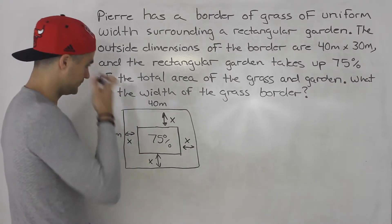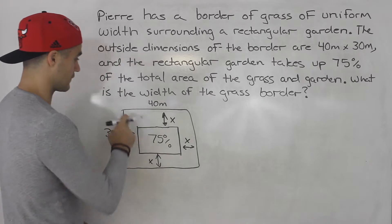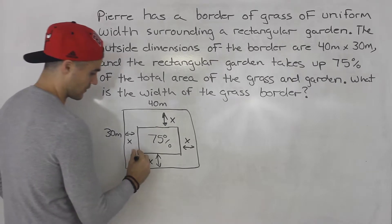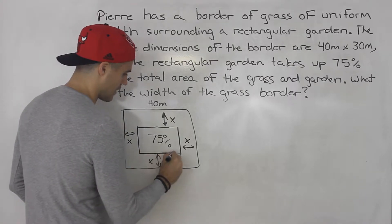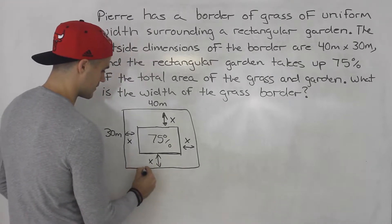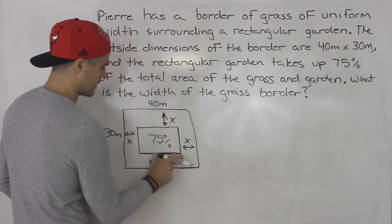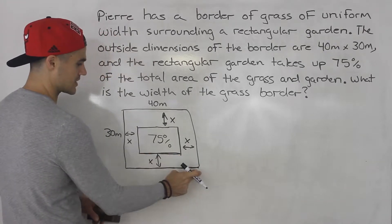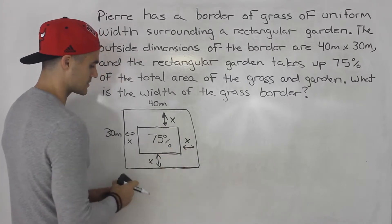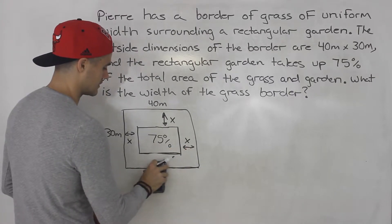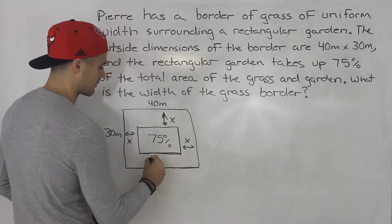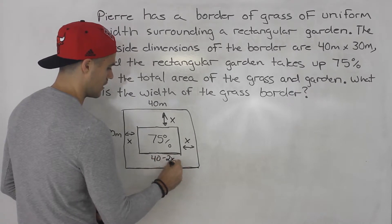So notice if this is 40, this is 30, this is x all around, we can create expressions for the length of the actual garden and the width of the garden. So if this whole thing here is 40 then what's this going to be? Well it's going to be 40 minus x minus x. So it's going to be 40 minus 2x. That's going to be the expression for the length of the garden.